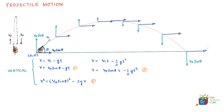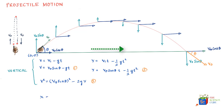Combining v₀ cosθ and v₀ sinθ gives a resultant velocity of v₀, at the same angle theta but in the downward direction on landing. The only equation for horizontal motion is that displacement in the horizontal direction x = v₀ cosθ · t. Let's label this as equation 4.